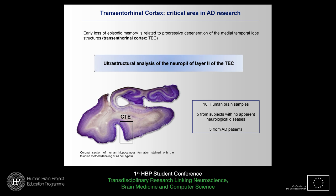In addition, the early loss of episodic memory which occurs in Alzheimer's disease patients is related with the progressive degeneration of medial temporal lobe structures, with one of the first affected areas being the transentorhinal cortex. For all these reasons, we focused this research on an ultrastructural analysis of the neuropil of Layer 2 of the transentorhinal cortex, examining the state of the synapses in this disease.